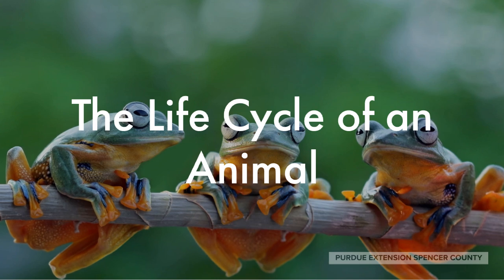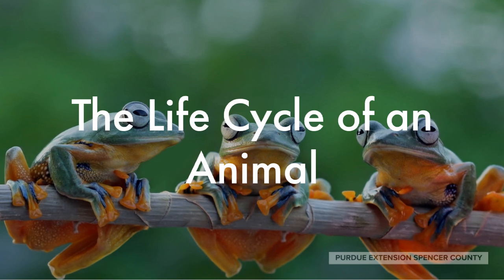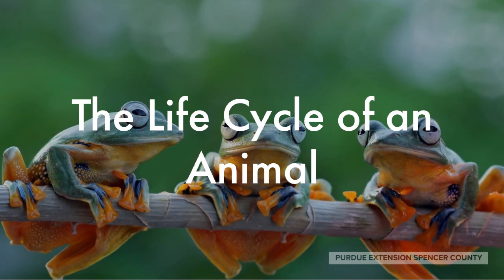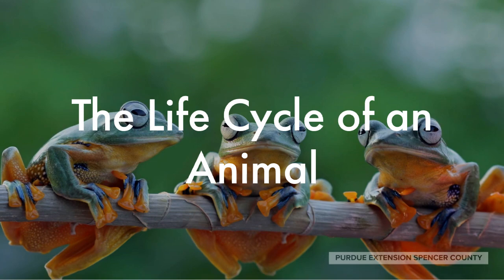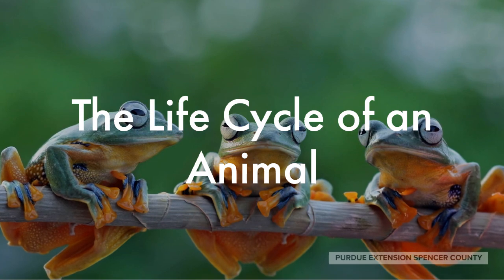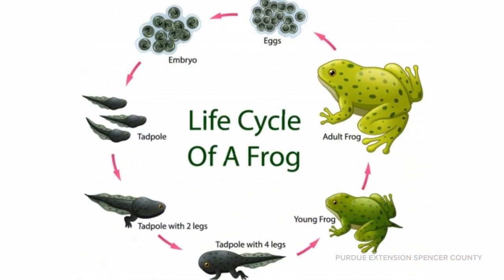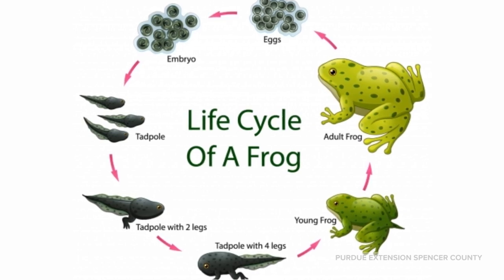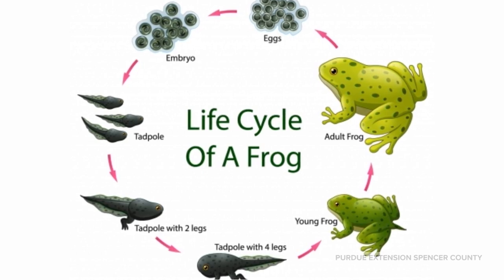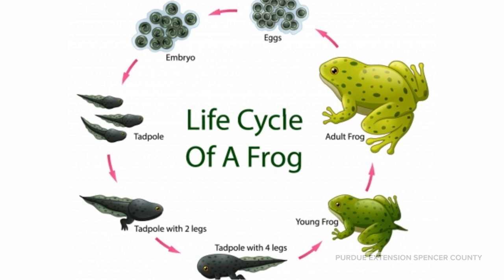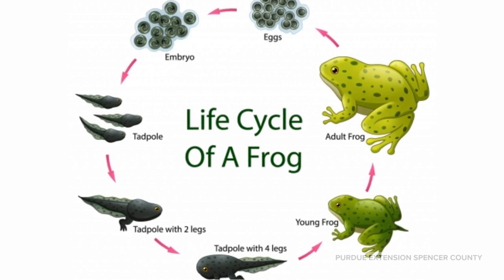Now, we are going to talk about the life cycle of an animal using a frog as an example. Frogs are amphibians, like toads and salamanders. This means they start their early life in the water. Then, as they grow older, they spend more time on land.